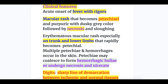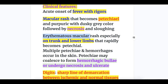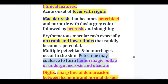Clinical features of Waterhouse-Friderichsen syndrome: acute onset of fever with rigors. Rash — macular rash that becomes petechial and purpuric with a dusky gray color, followed by necrosis and sloughing. Erythematous macular rash especially on the trunk and lower limbs, which rapidly becomes petechial. Multiple petechiae and hemorrhages occur in the skin; petechiae may coalesce to form hemorrhagic bullae or undergo necrosis and ulcerate.